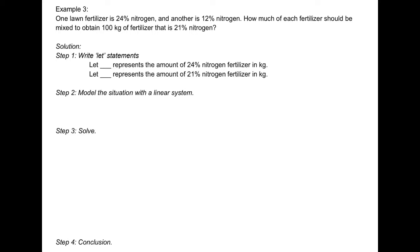By looking at the last sentence, we know we want to find the amount of each fertilizer. H represents the amount of 24% nitrogen fertilizer in kilograms — H for the higher percentage. L represents the amount of 21% nitrogen fertilizer in kilograms — L for the lower percentage.